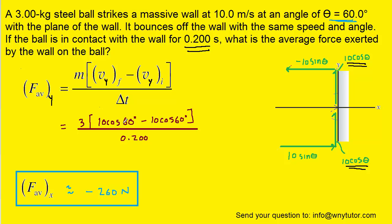Now, we'll notice something interesting here. When we subtract 10 cosine of 60 minus 10 cosine of 60, of course, we're going to get 0 inside of the brackets here. And then when we multiply 3 times 0, we get 0, and we divide by 0.2, we get 0. So, in other words, the average force in the y direction turns out to be 0 newtons. There is no average force in the y direction.